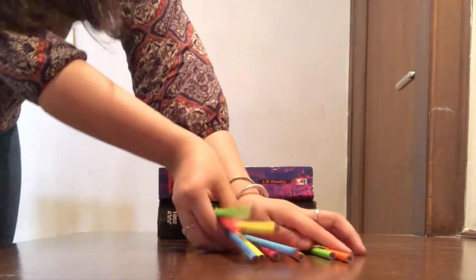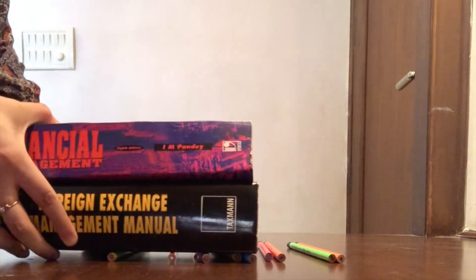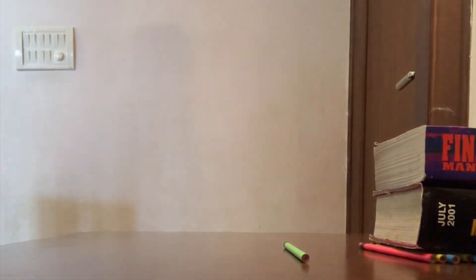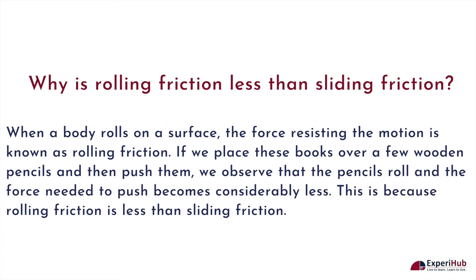Now let's place the round pencils together and put the heavy books on top. With just a little push, we're able to move the books smoothly — hence less effort is required and the movement of books becomes easier when we slide them. When a body rolls on a surface, the force resisting the motion is known as rolling friction.